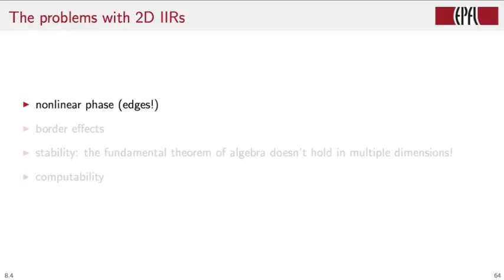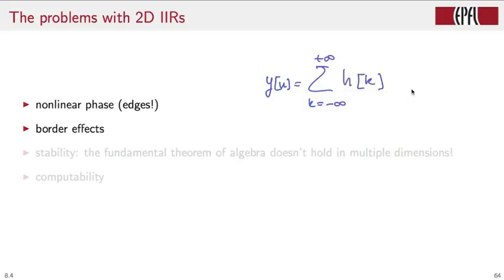Speaking of edges, here we come to the first issue with respect to IIR filters in image processing. Edges are points of discontinuity in the grayscale signal, and as such they require that the phase of the Fourier components that make up the image are precisely aligned. Since you cannot have an IIR filter with linear phase, the result of a filtering operation will always affect negatively the edges if we use an IIR filter. A second problem with IIR filters is related to border effects. Consider the convolution operation in 1D: y[n] is equal to the sum for k from minus infinity to plus infinity of the impulse response h[k] times x[n−k].